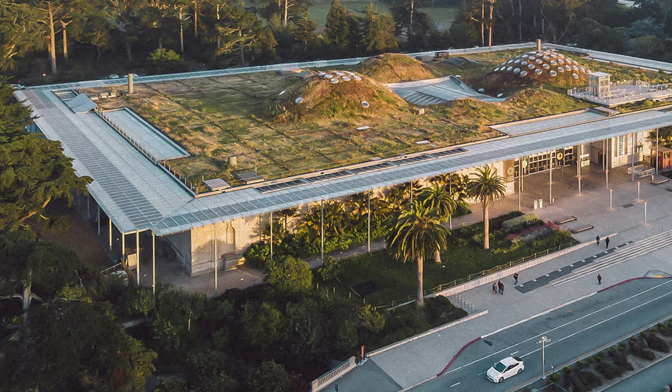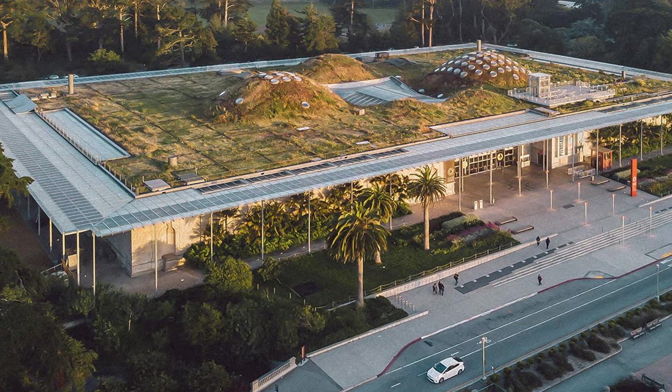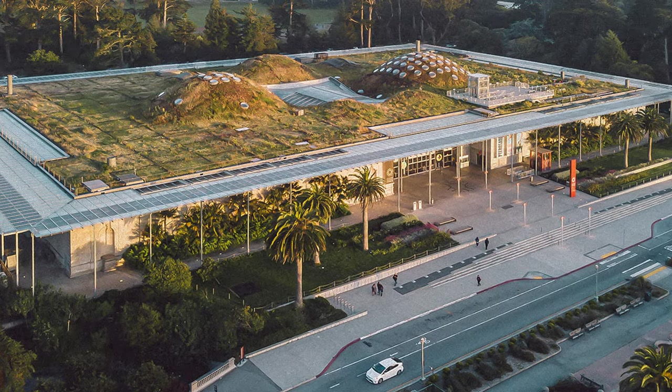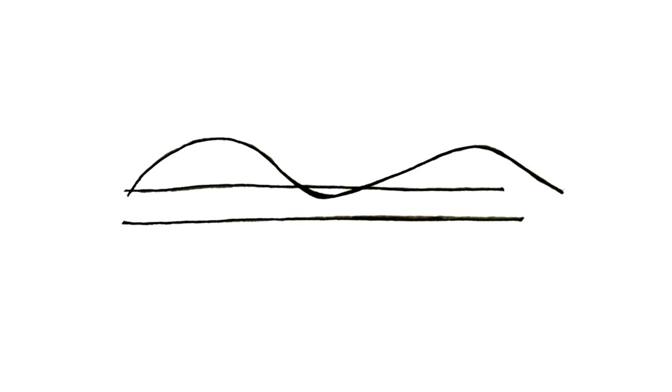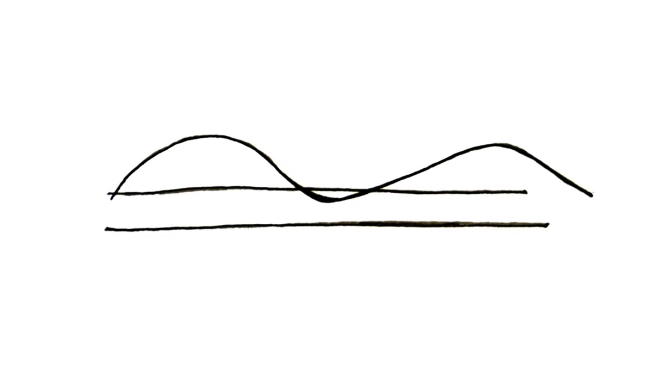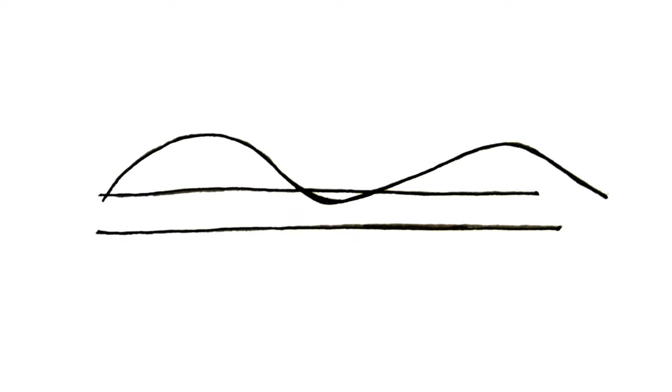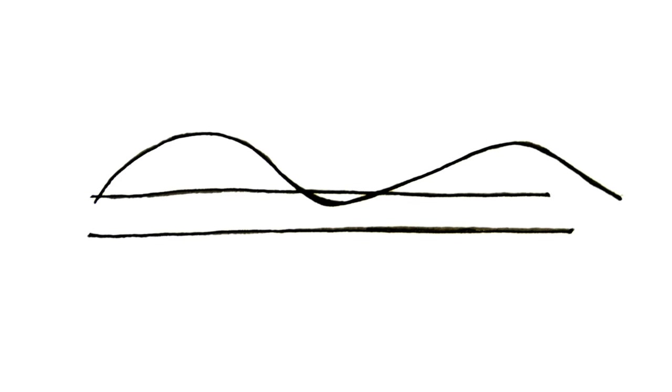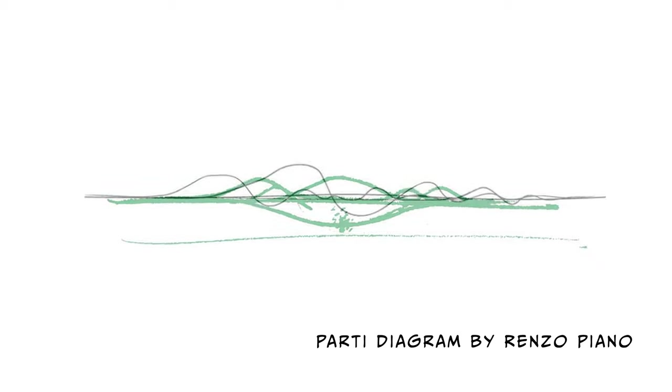But then I realized that Renzo Piano's Academy of Sciences in San Francisco is a direct copy of Wright's idea. Here's the parti diagram I drew of Piano's building. He takes the same concepts Wright used and applied it to the California Academy of Sciences building. He creates a curved roof to mimic the hills of San Francisco, just like Wright did to mimic the mountains of Marin.